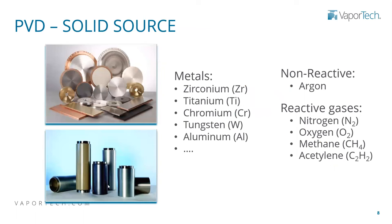For most industrial applications in our field, the source is going to be a solid material in the shape of a plate or disc — be it rectangular or circular — or for higher production and higher throughput, you're probably going to have a cylindrical target. Some of the metals we typically use are zirconium, titanium, chromium, tungsten, aluminum, and so on. There is very little limitation to what type of target material you can use in PVD, though there are limitations depending on the technique used.